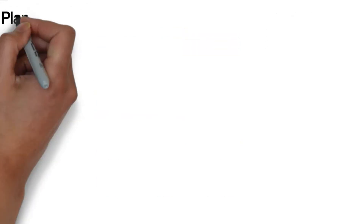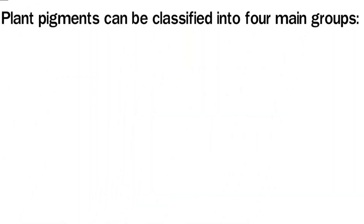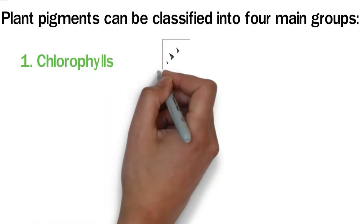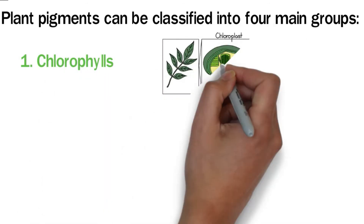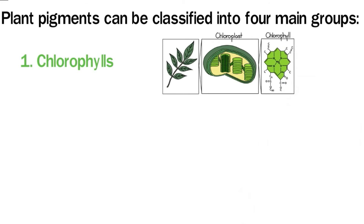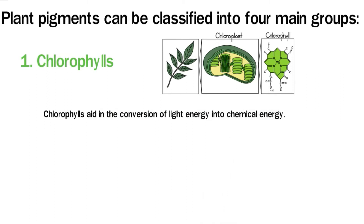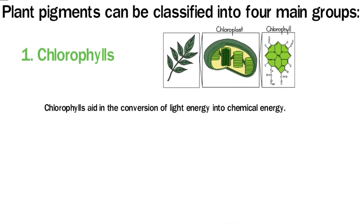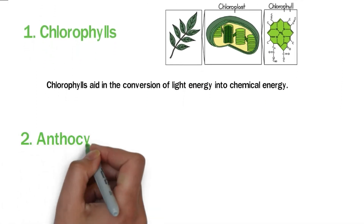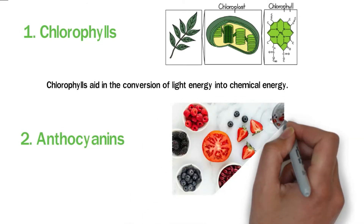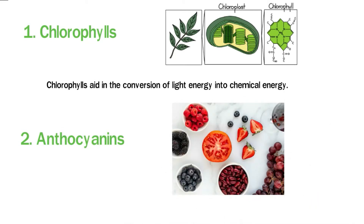Plant pigments can be classified into four main groups. First, chlorophylls: chlorophylls are naturally occurring pigments that give plants their green color. These molecules are essential during photosynthesis, aiding in the conversion of light energy into chemical energy. Second, anthocyanins: anthocyanins are glycosylated pigments that give fruits and flowers the colors blue, yellow, red, and purple.